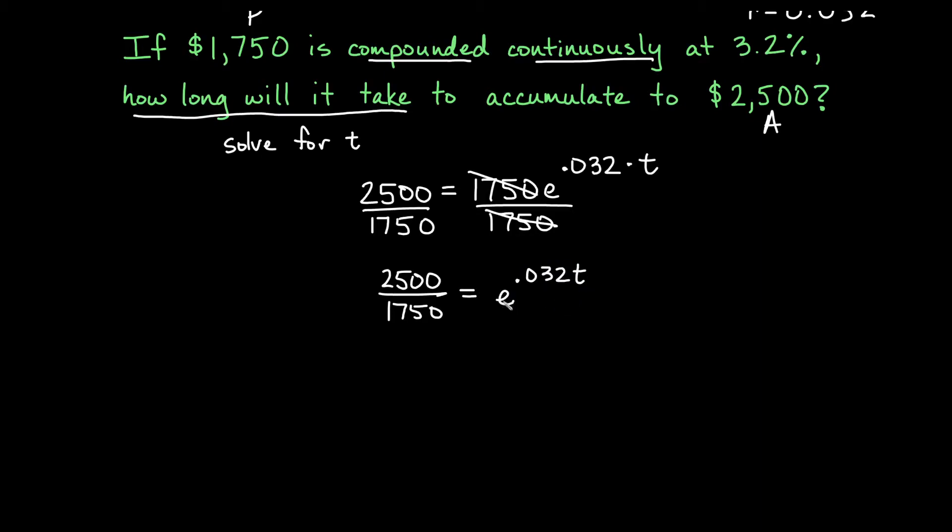Now I need to get rid of the exponential and just work with this 0.032 times t. So it's an exponential base e. How I get rid of an exponential, the opposite operation is a log, and I need to use the correct base. Since this is a base e exponential, I use a base e logarithm. And remember that a base e logarithm is called the natural log. So we will take the natural log of both sides.